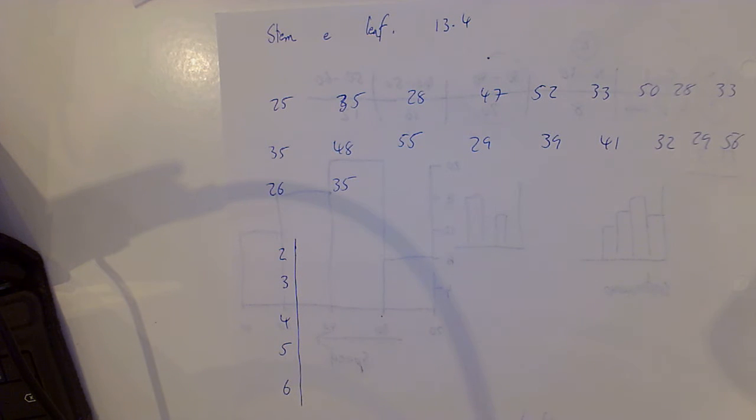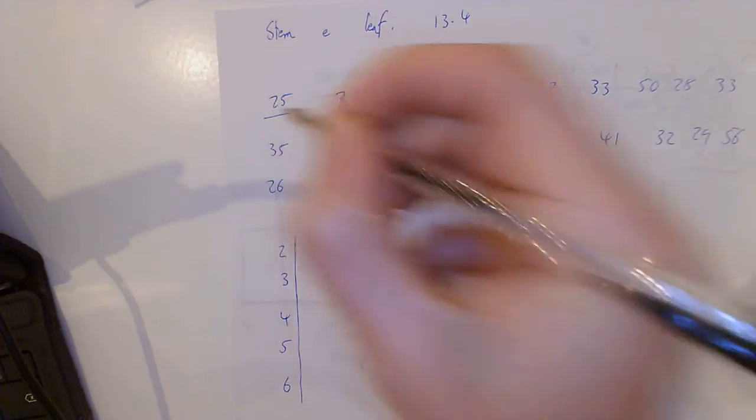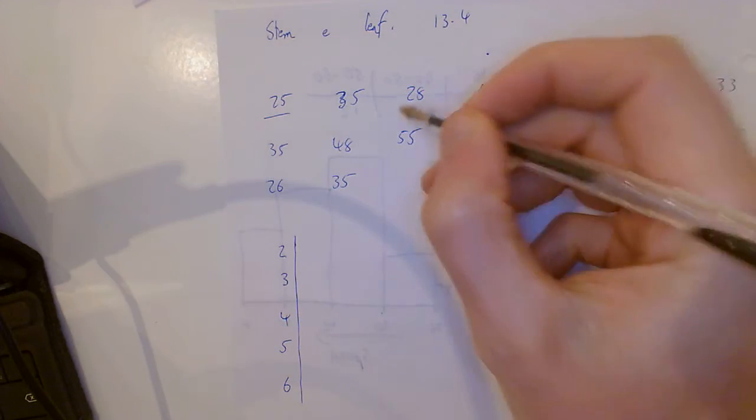But what we're concerned with today is drawing out the stem and leaf plot. I'm going to underline all the ones with 20s, starting with 28.